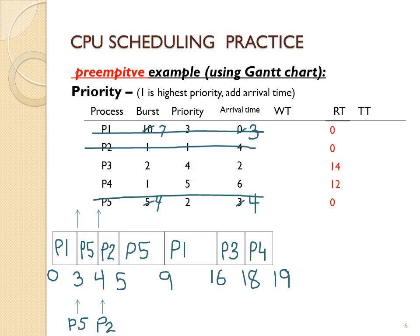It's very important that you get the Gantt chart right, and once you do, you can make your calculations. For response time you take the first time a process gets on the CPU and subtract the arrival time. P1 first got on the CPU at time zero and arrived at time zero, so P1 didn't wait at all. P2 first got on the CPU at time four and arrived at time four, so P2 didn't wait at all. P3 had to wait 14 time units before its first CPU burst. P4 had to wait 12 time units, and P5 waited zero time units — it arrived at time three and got on the CPU right away.